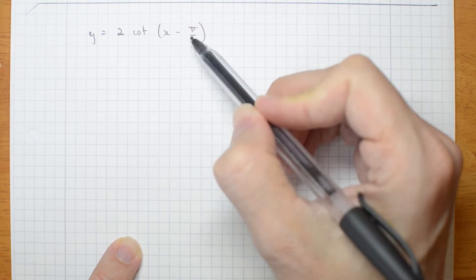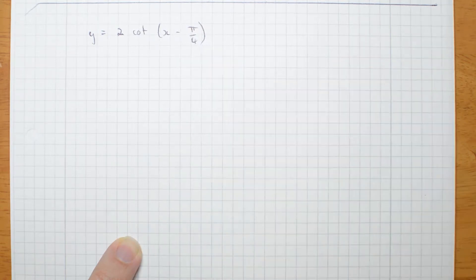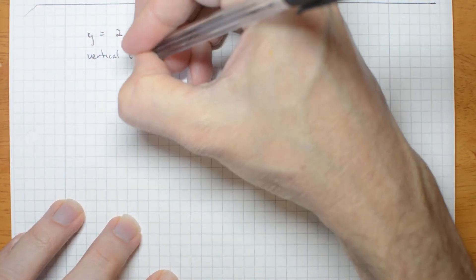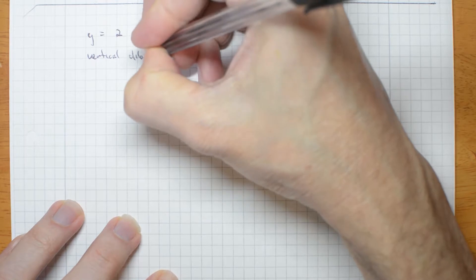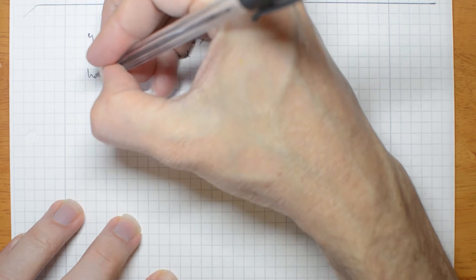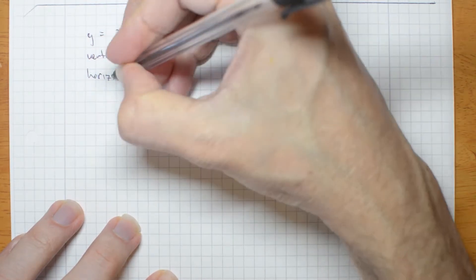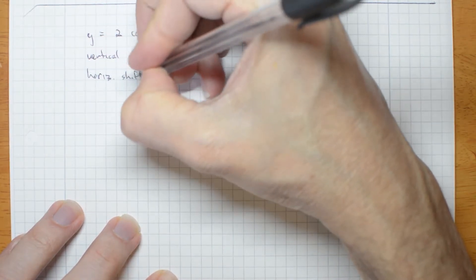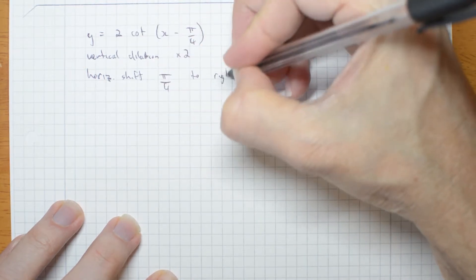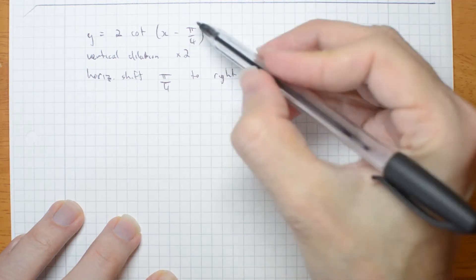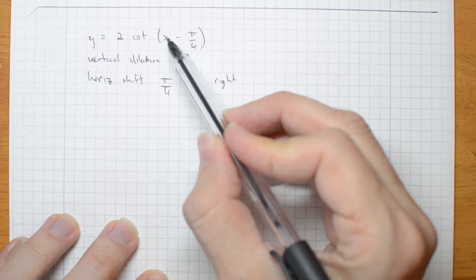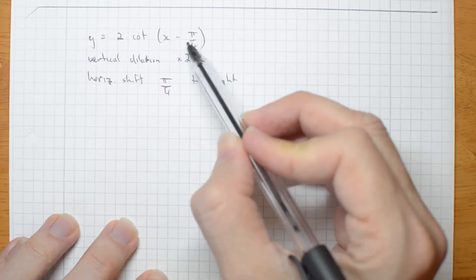There is a horizontal shift. Do you remember which direction? Vertical dilation times 2 and a horizontal shift of pi on 4 to the right. It's to the right. But the value of my function will be the value it normally would be at x minus pi on 4.